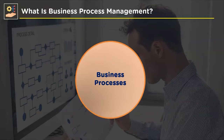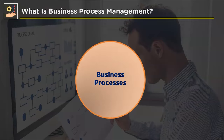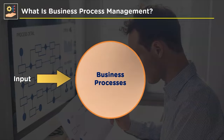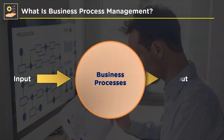If we break down the nuts and bolts of business process management, you'll find three key factors: the first is business processes, the second is the set of inputs, and the third is the output retrieved after processing the presented inputs.